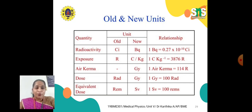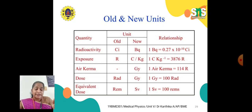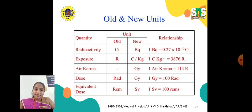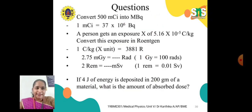The relationships between old and new units are: for radioactivity, 1 Becquerel equals 0.27 × 10⁻¹⁰ Curie; for exposure, 1 C/kg equals 3876 R; for air kerma, 1 Gy equals 114 R; for absorbed dose, 1 Gray equals 100 RAD; and for equivalent dose, 1 Sievert equals 100 rem. Assessment questions are attached, including converting 500 millicurie into megabecquerel.